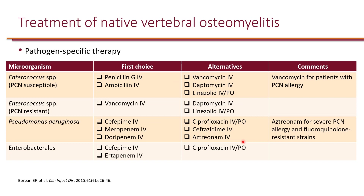For penicillin-susceptible enterococcus, either penicillin or ampicillin is drug of choice, with vancomycin, daptomycin, and linezolid as alternatives. Penicillin-susceptible enterococcus is unlikely to be vancomycin-resistant. However, when enterococcus is penicillin-resistant, it can sometimes also be resistant to vancomycin — at that point, daptomycin and linezolid become drugs of choice. If enterococcus is penicillin-resistant but susceptible to vancomycin, vancomycin would still be the drug of choice.